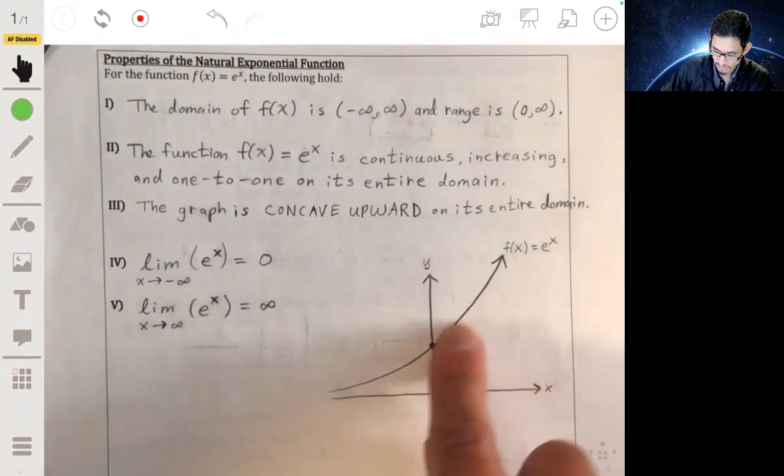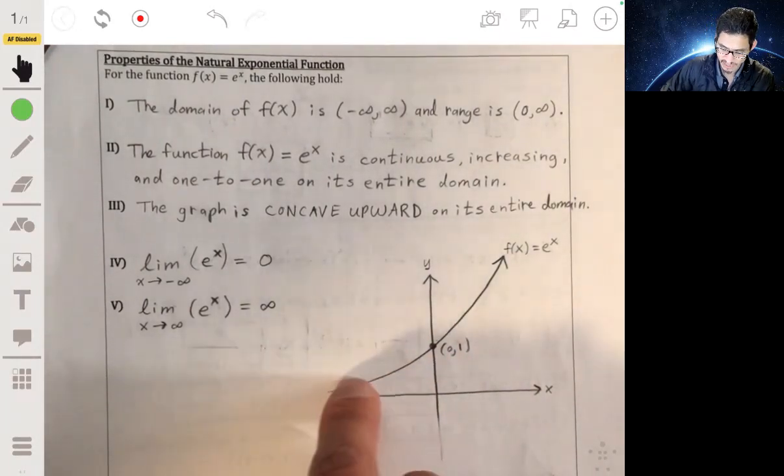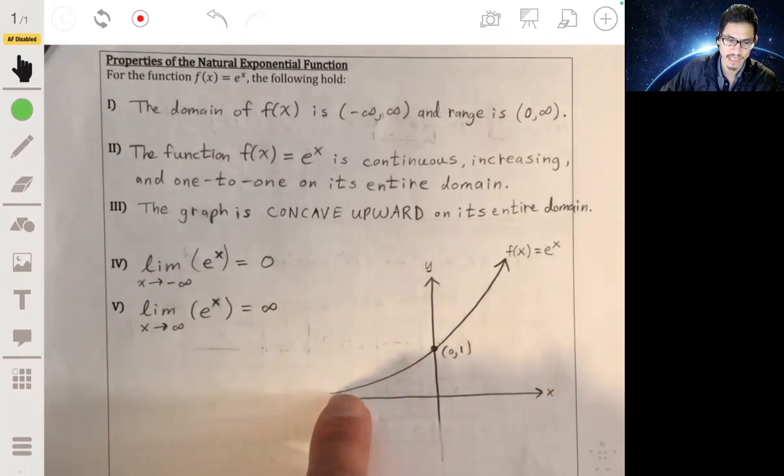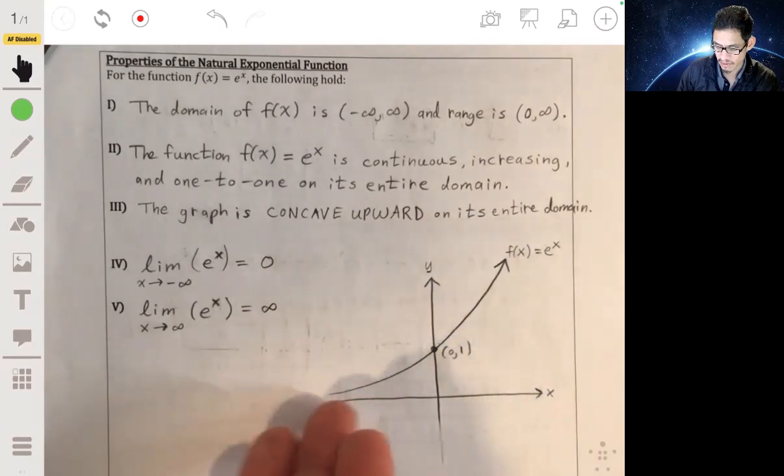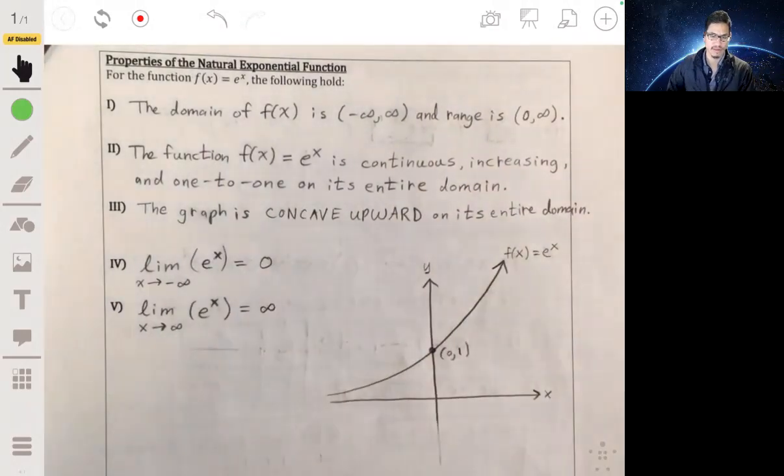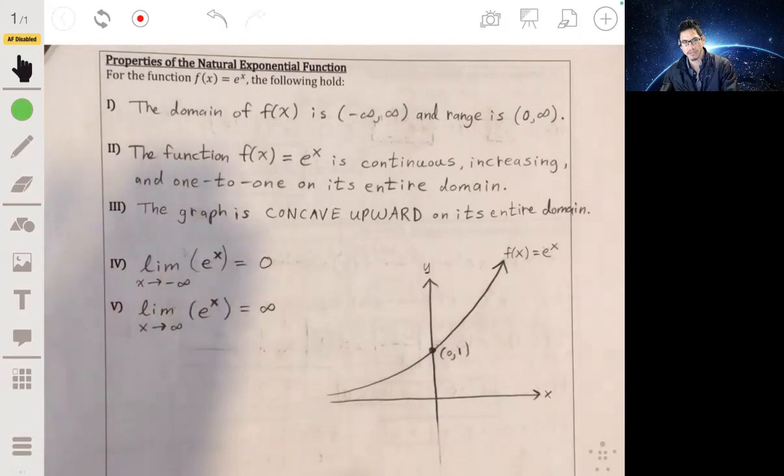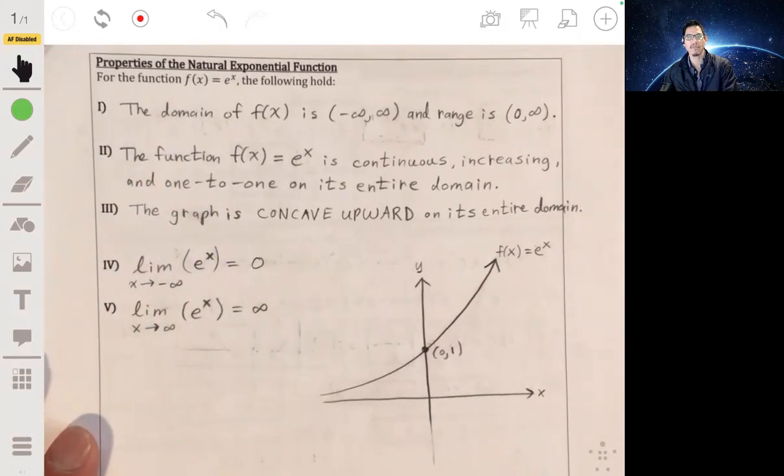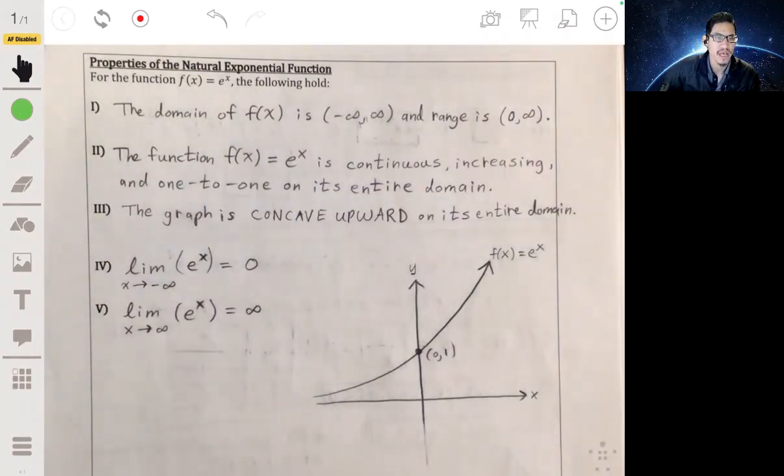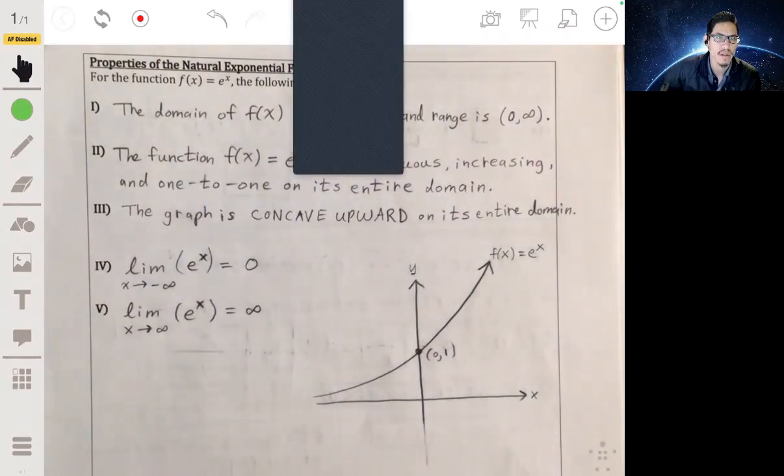And the limits, as x goes to negative infinity, would be zero. As you go to the left, it gets infinitely close to zero, so the x-axis, it never actually reaches it. And as x goes to the right, it blows up towards infinity. So, make sure you understand this. You don't have to formally prove this, but make sure you understand what these mean, because that's going to be key when you're solving some tricky exponential problems. Thank you.